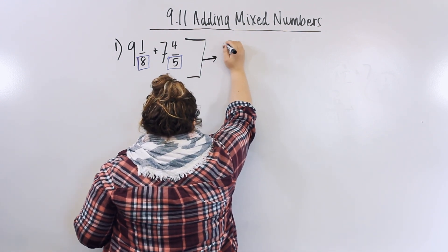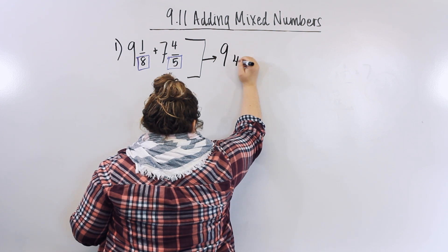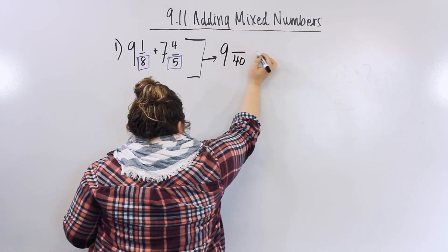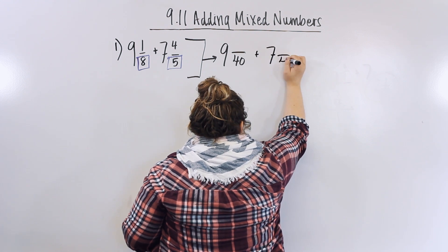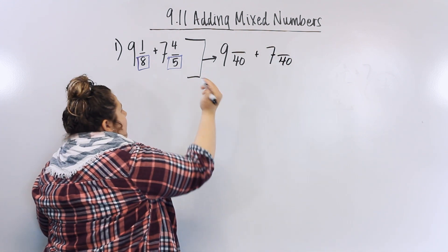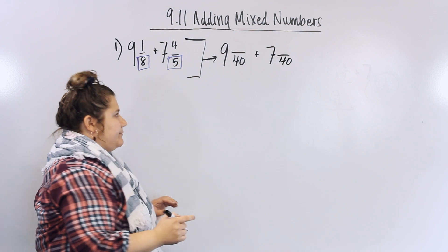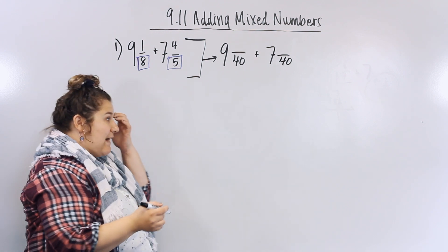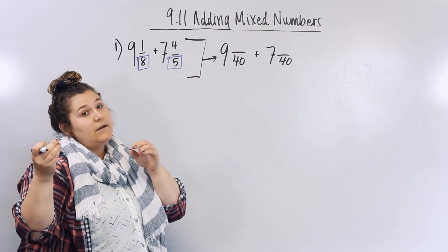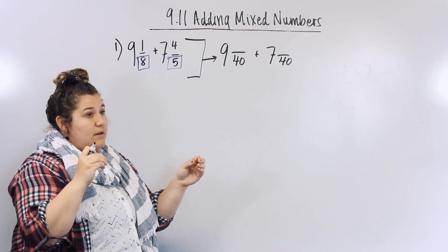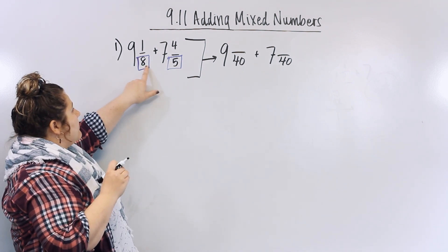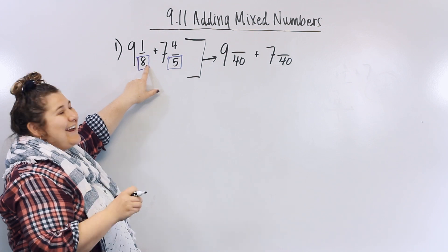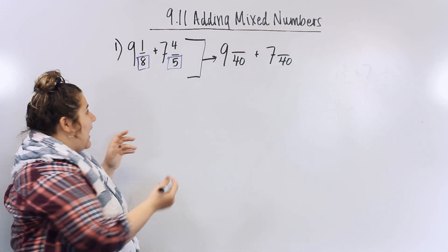And I'm going to go ahead and write my nine because my nine doesn't change, my forty, my seven because the seven doesn't change. So now I know forty is my common denominator. Now I have to figure out - I have to multiply my numerator and my denominators. So what number times eight can go into forty? Five.